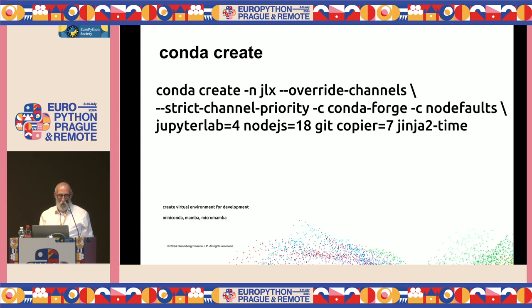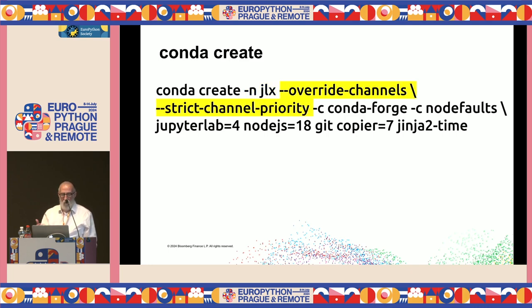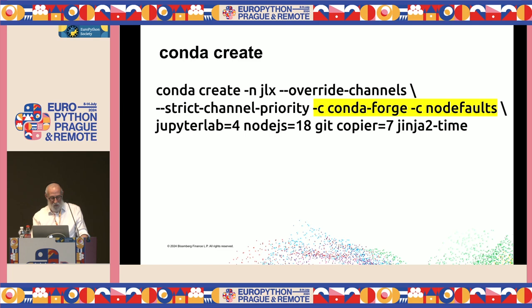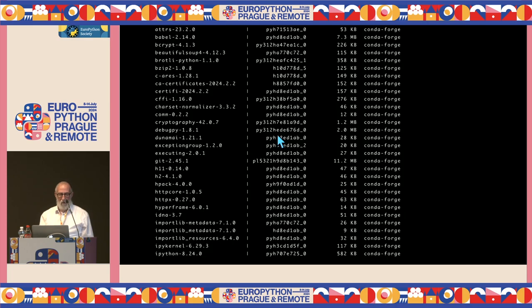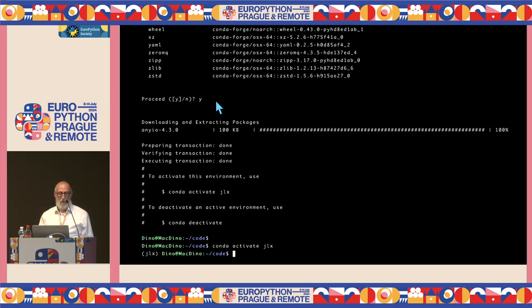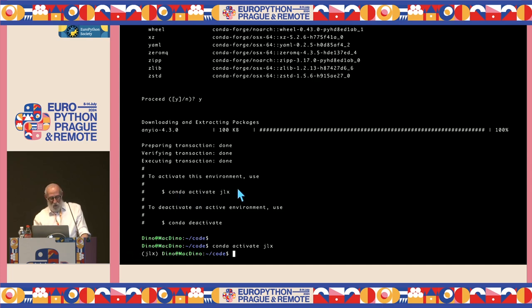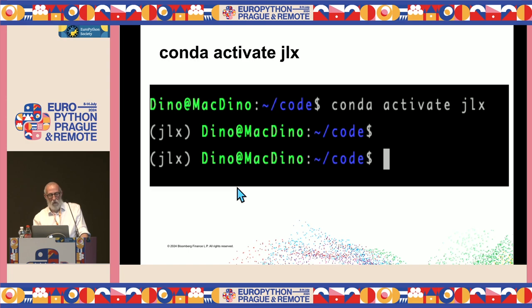To start the tutorial, create a virtual environment — I like using MiniConda; you can also use Conda, Mamba, or MicroMamba. Run conda create, name the environment JLX (JupyterLab extension), override channels with strict channel priority using CondaForge so it doesn't fall back to anything else. Install JupyterLab 4, NodeJS 18, Git, Copier 7, and Jinja2Time which Copier needs. After it lists packages and you confirm, a progress bar runs, then activate with conda activate JLX.